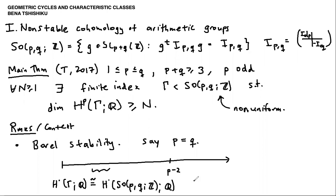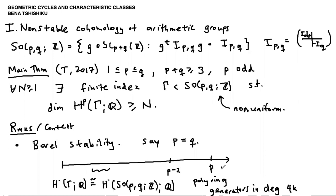This stable cohomology is a polynomial ring with generators in degrees 4k. So in this range the cohomology looks like a polynomial ring and it's completely independent of the particular lattice you choose. In contrast, the theorem is about cohomology in degree p, where p is odd, and there are lots of non-trivial things.